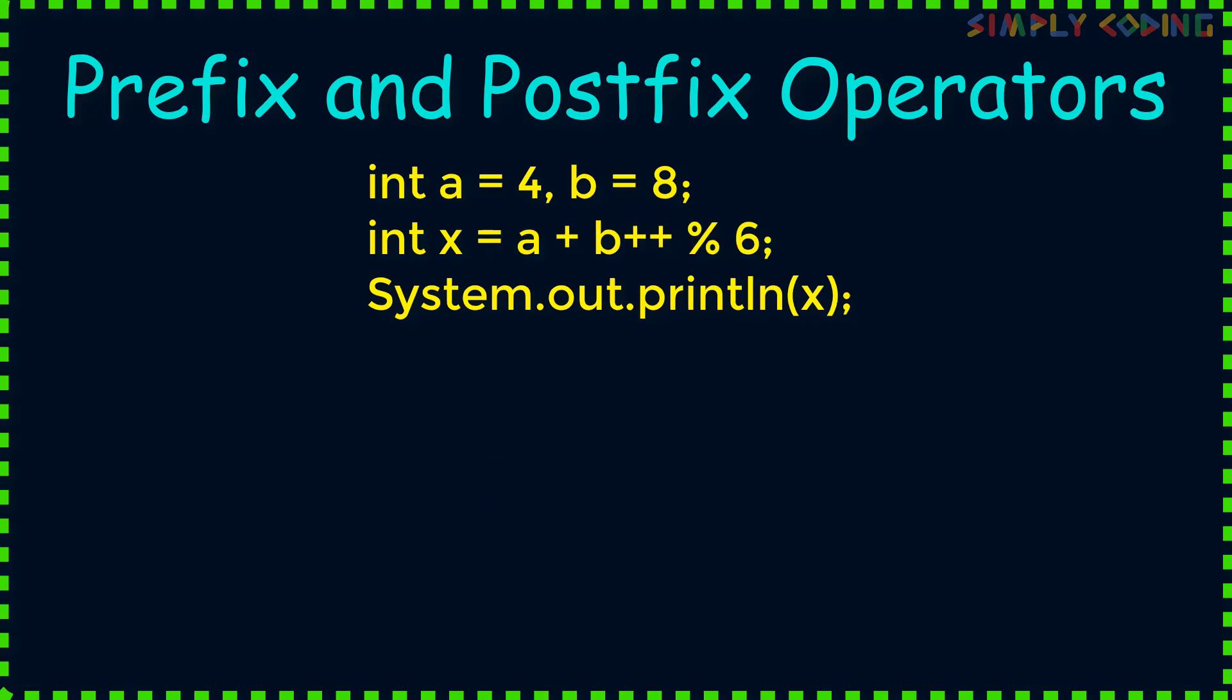Now we will solve the second equation. Here we will first write 4 plus as is. Next since it is postfix, we will substitute the value of b first which is 8 and then increment b. So b becomes 9 but the value used in the equation is 8 only. We then note down the %6 as is. Now we will again not forget the precedence and solve 8%6 first which will give us 2, which we will add to 4 to get 6.